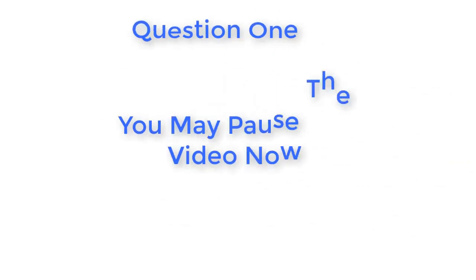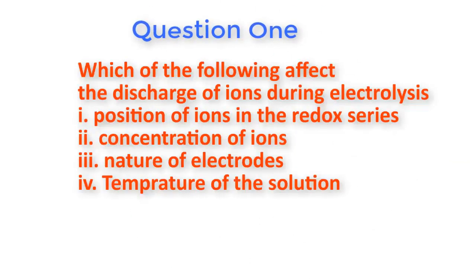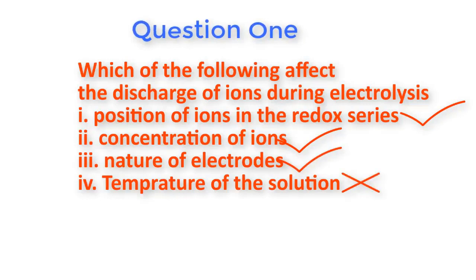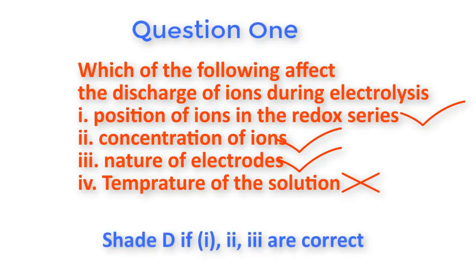Now you can pause the video. Alright, now we will solve all the problems for you. Question one asks which of the following affect the discharge of ions during electrolysis. Position of ions in the redox series, concentration of ions, and nature of electrode all affect the discharge of ions. Temperature of solution has no effect. So options one, two, and three are correct, and four is wrong. From the rules given, D is the correct answer.